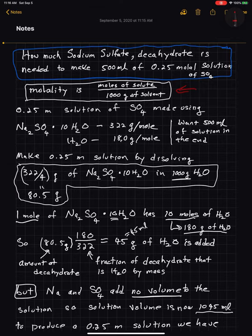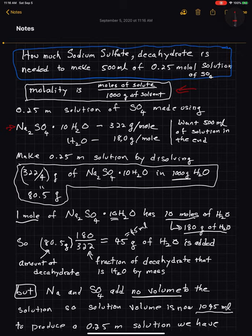Notice that if we look at the formula for sodium sulfate decahydrate, we have one sulfate ion for each molecule of the decahydrate. So one mole of decahydrate gives us one mole of sulfate. That's a mercy in doing this problem. So we have 0.25 moles of sulfate — that's what we want to compute. All we have to do is figure out 0.25 moles of the decahydrate.